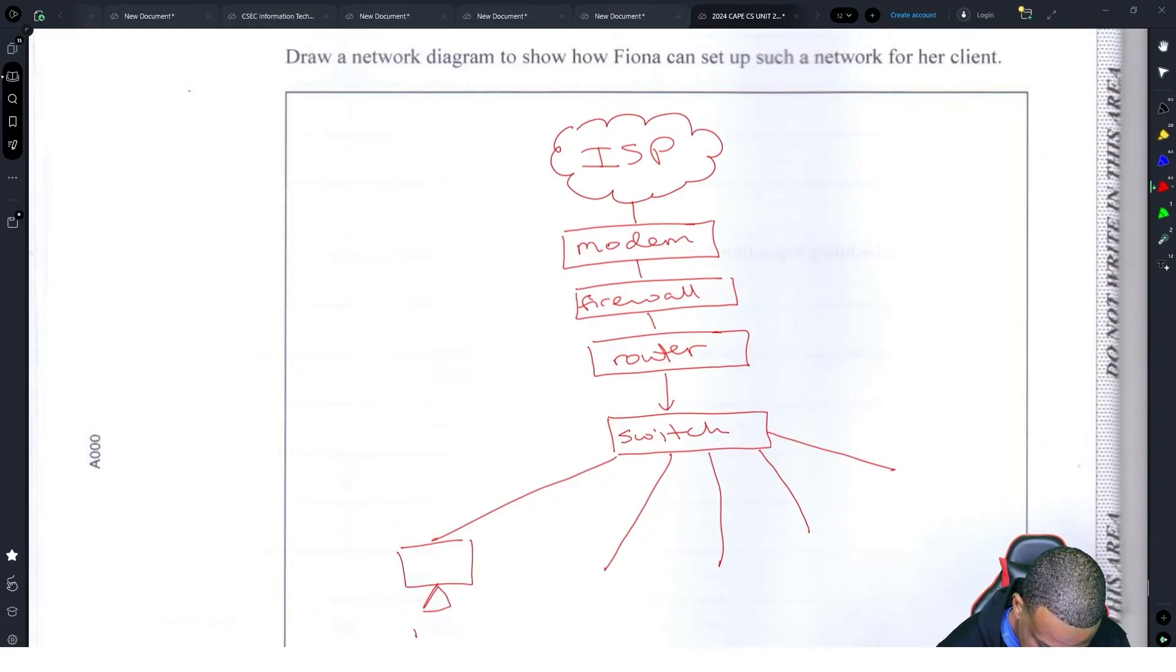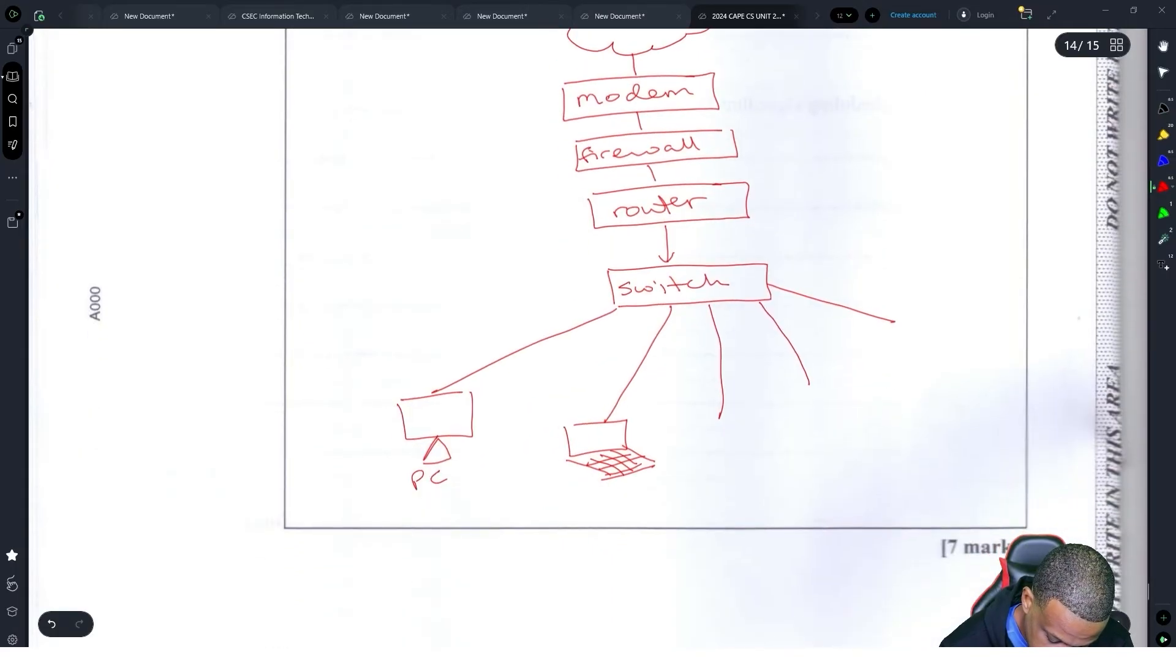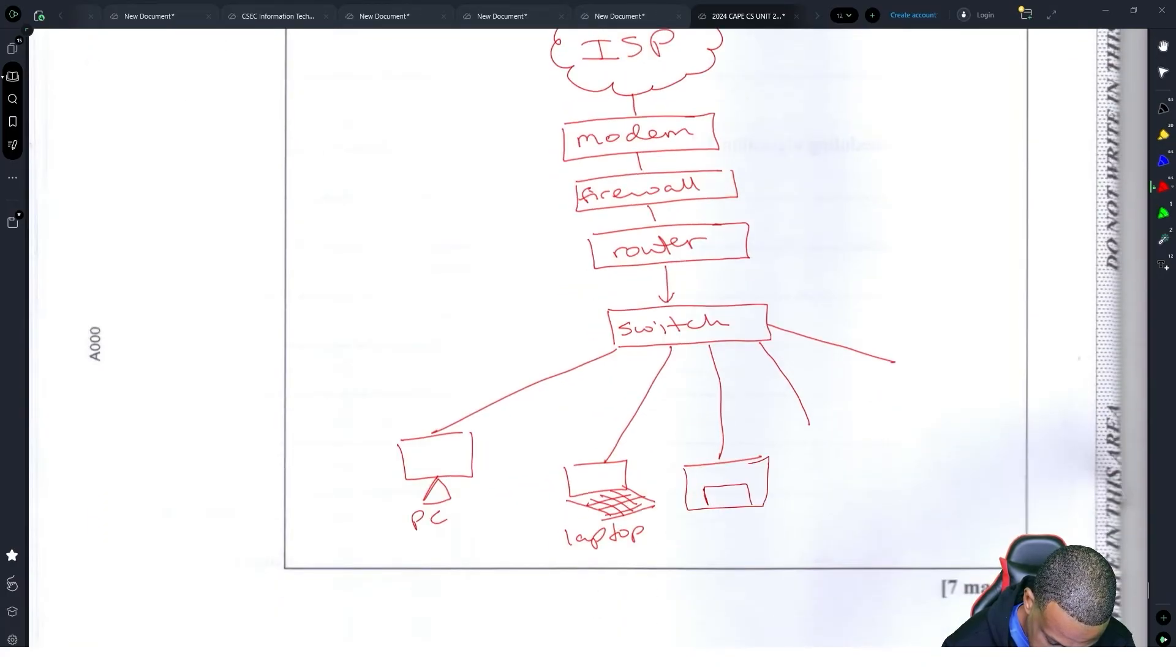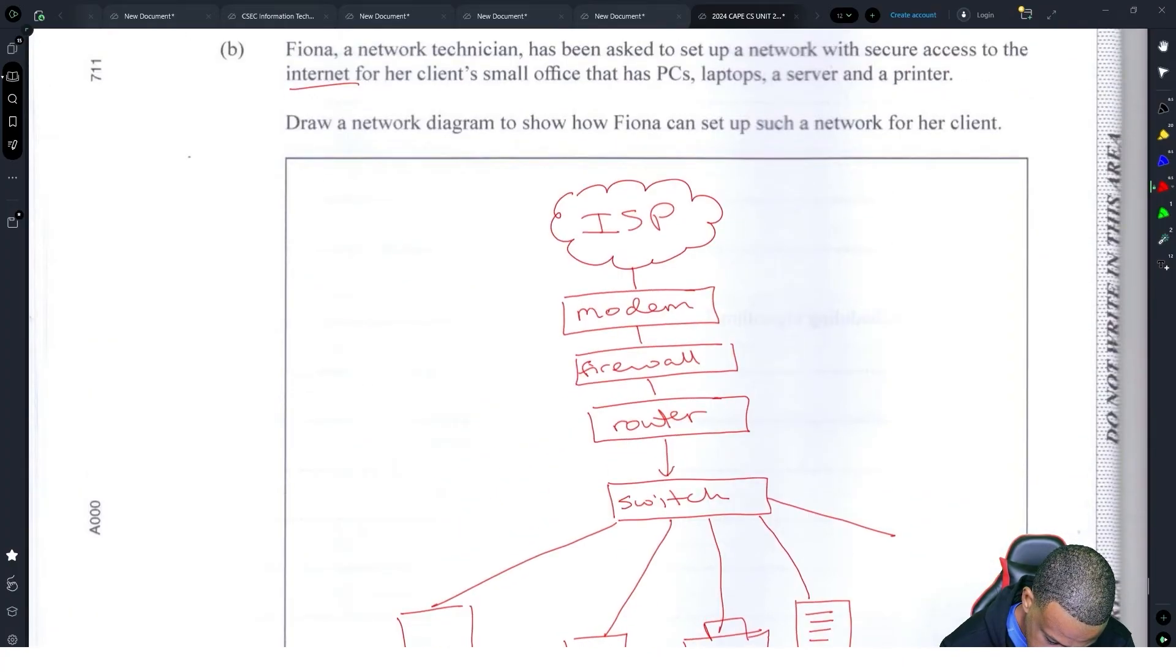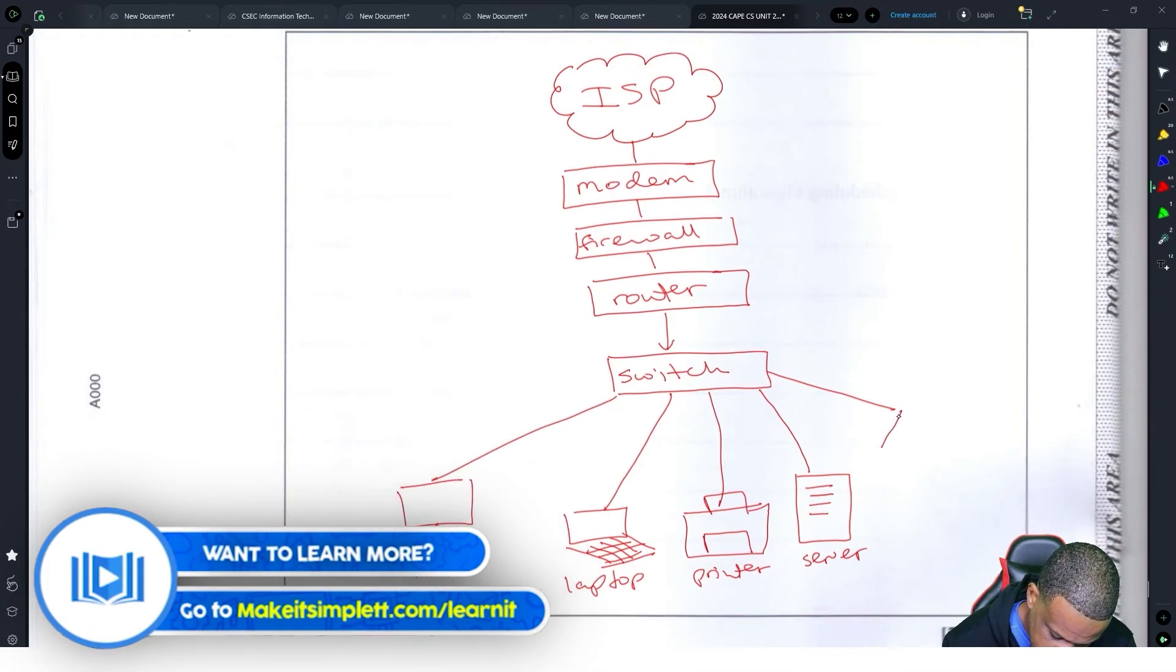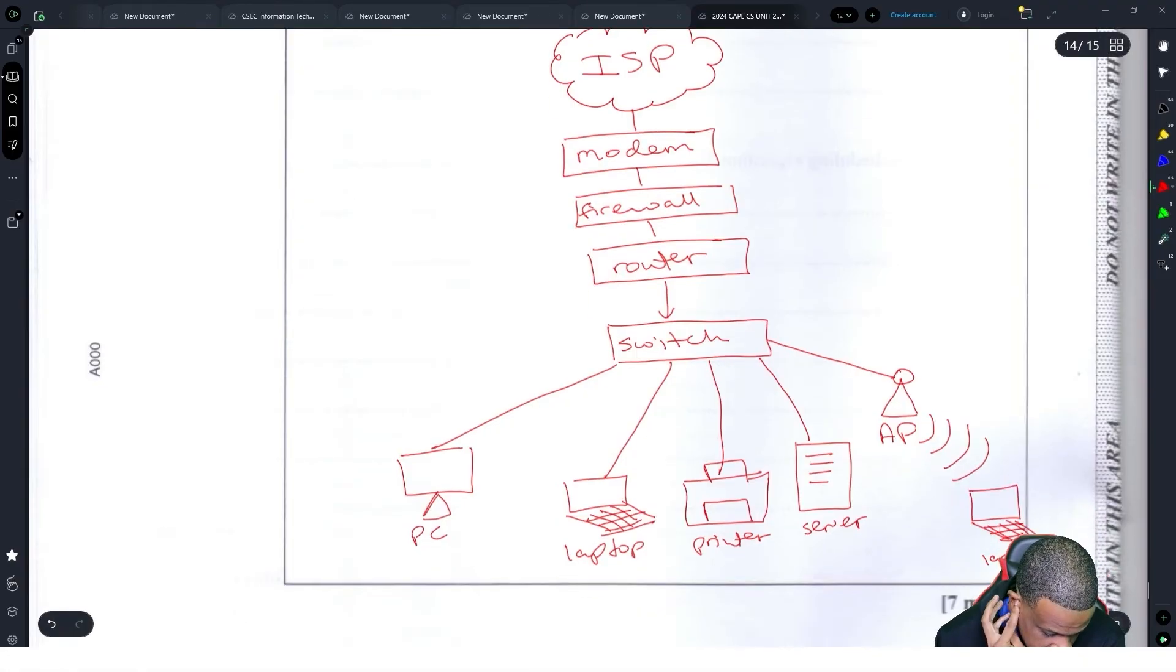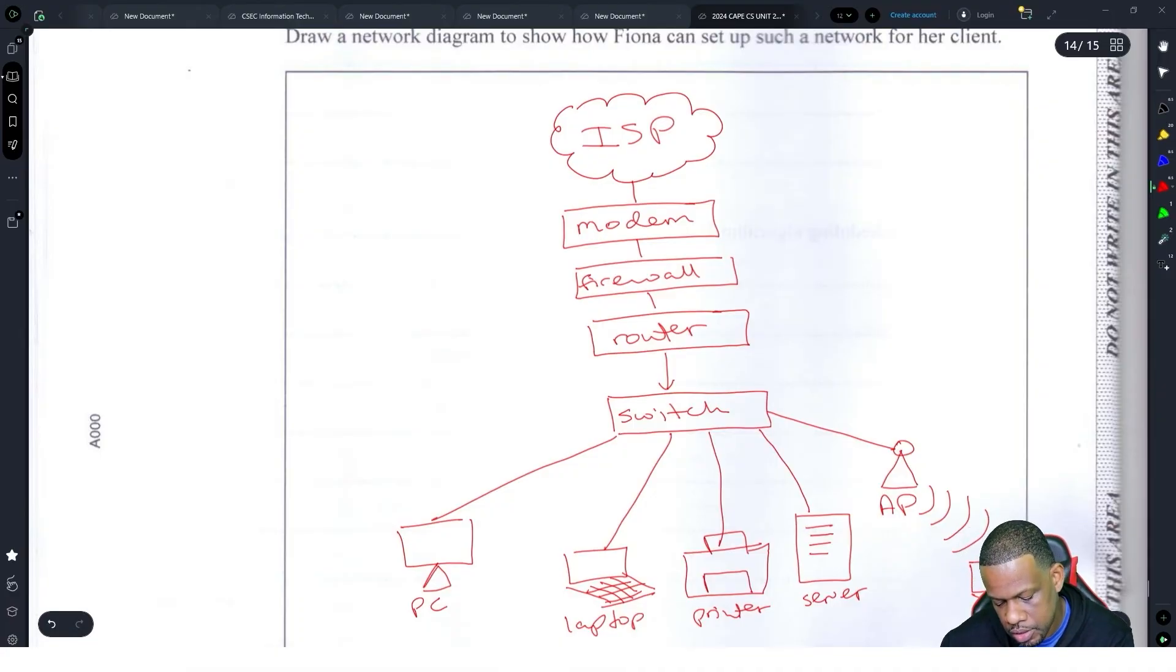The router hits a switch. The switch then serves everybody on the network. One is a PC, next one is a laptop, then they have a printer and a server, and let's give them an access point also that'll probably be able to connect to another laptop. Yeah, that's it. The ISP had to pass to the modem because the modem will demodulate and modulate everything, and the firewall will block all the packets that are bad. Packets that are good make it through to the router. The router sends it to the switch so that the switch will be able to distribute to wherever it needs to go.